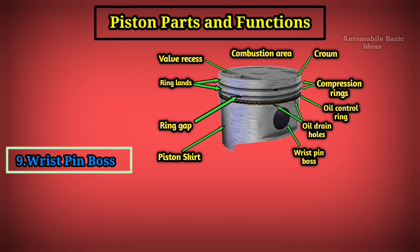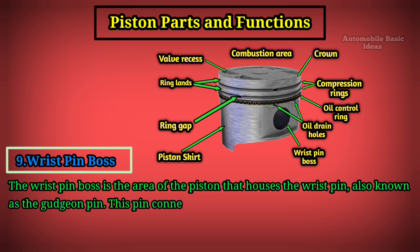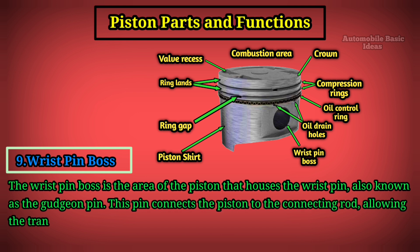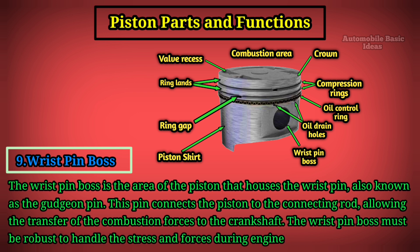Wrist Pin Boss: The wrist pin boss is the area of the piston that houses the wrist pin, also known as the gudgeon pin. This pin connects the piston to the connecting rod, allowing the transfer of the combustion forces to the crankshaft. The wrist pin boss must be robust to handle the stress and forces during engine operation.